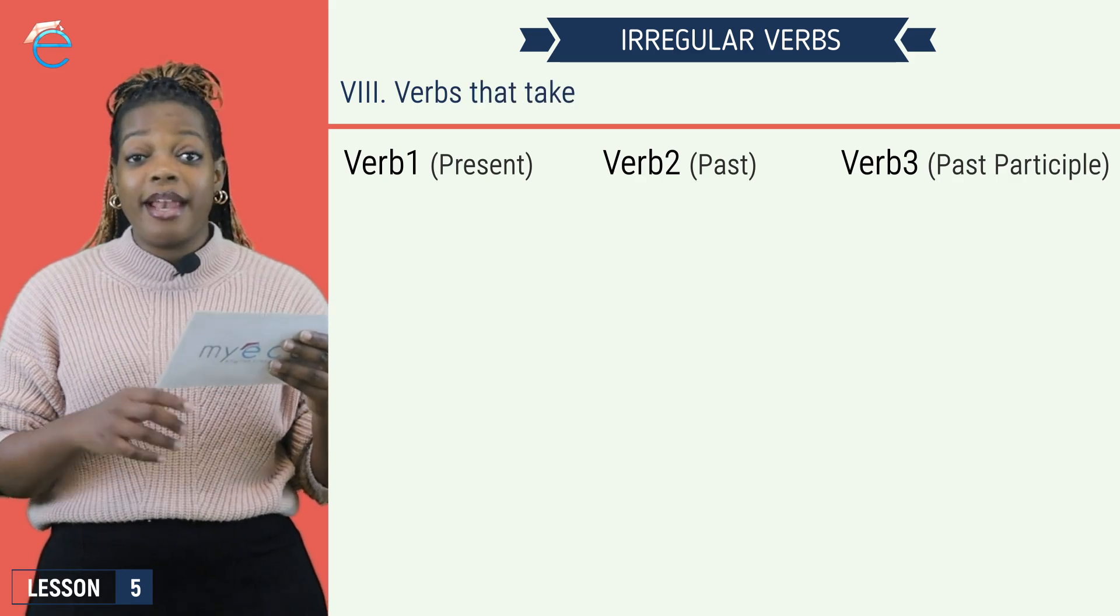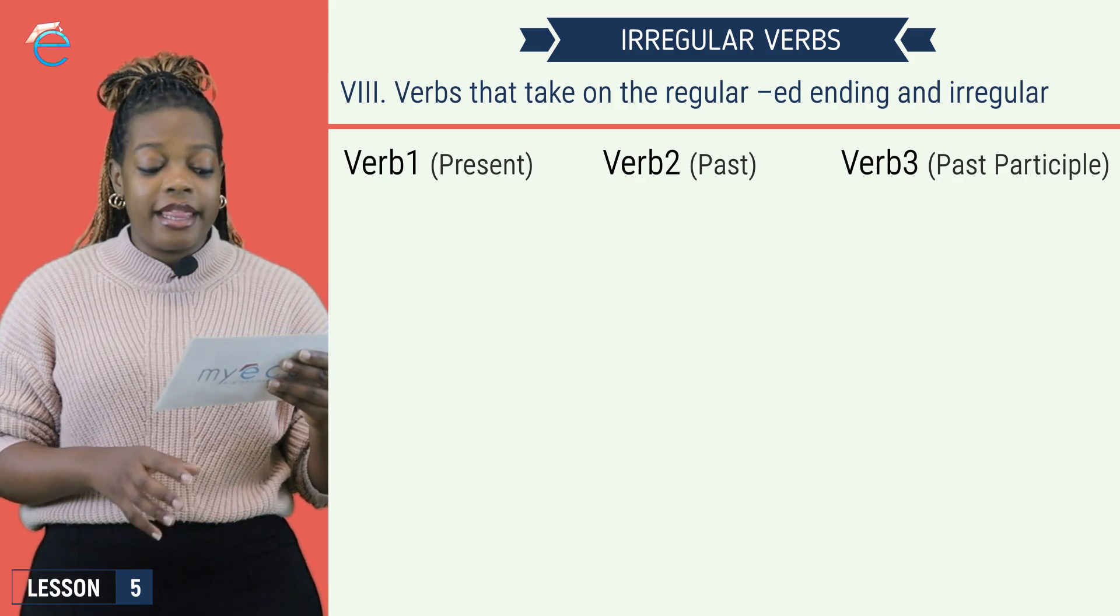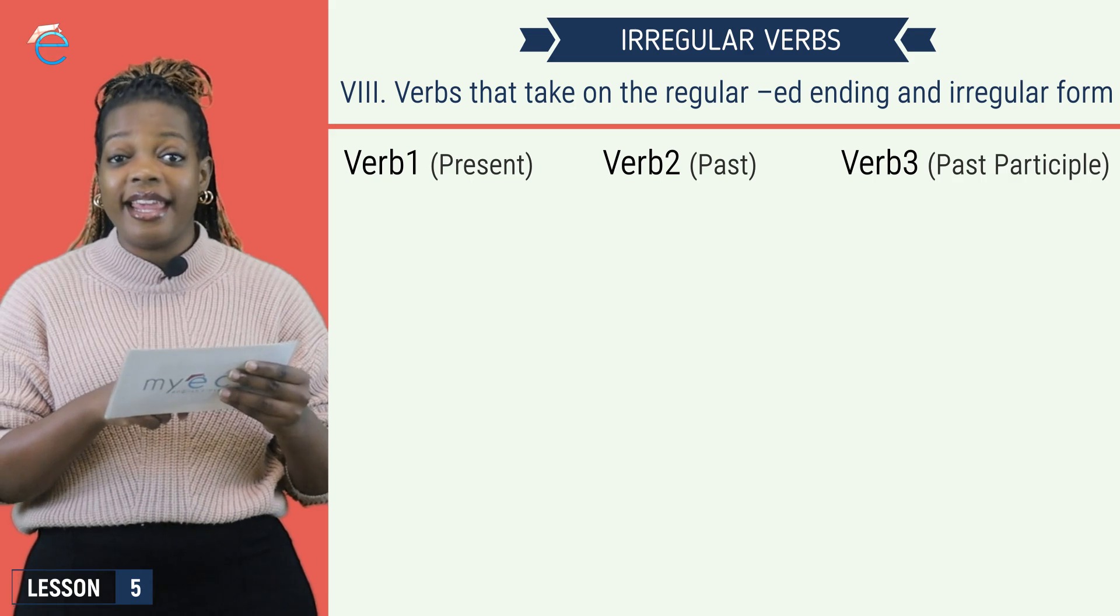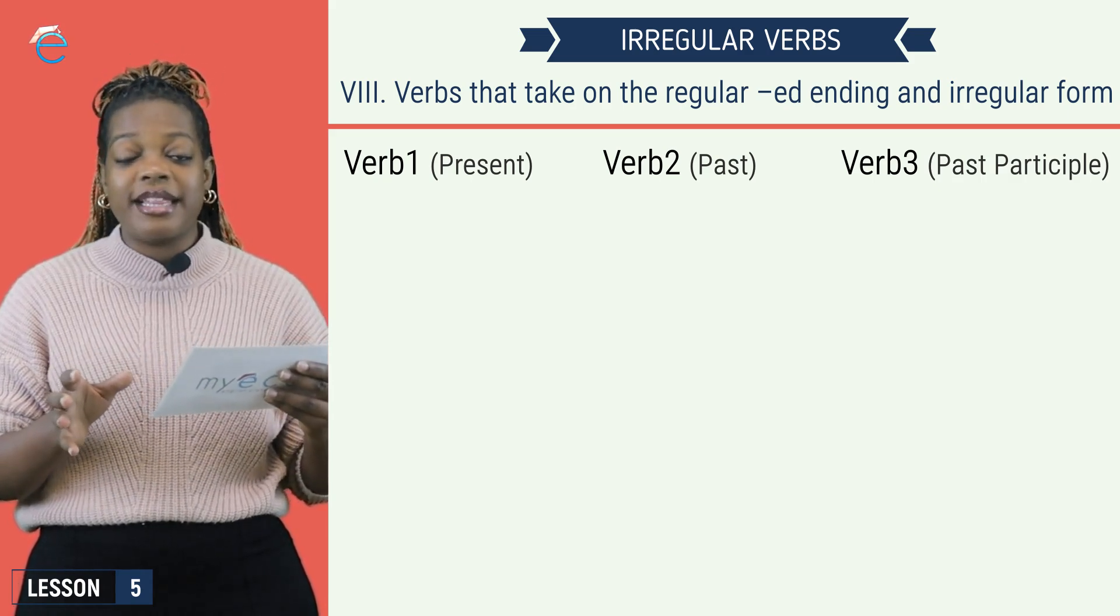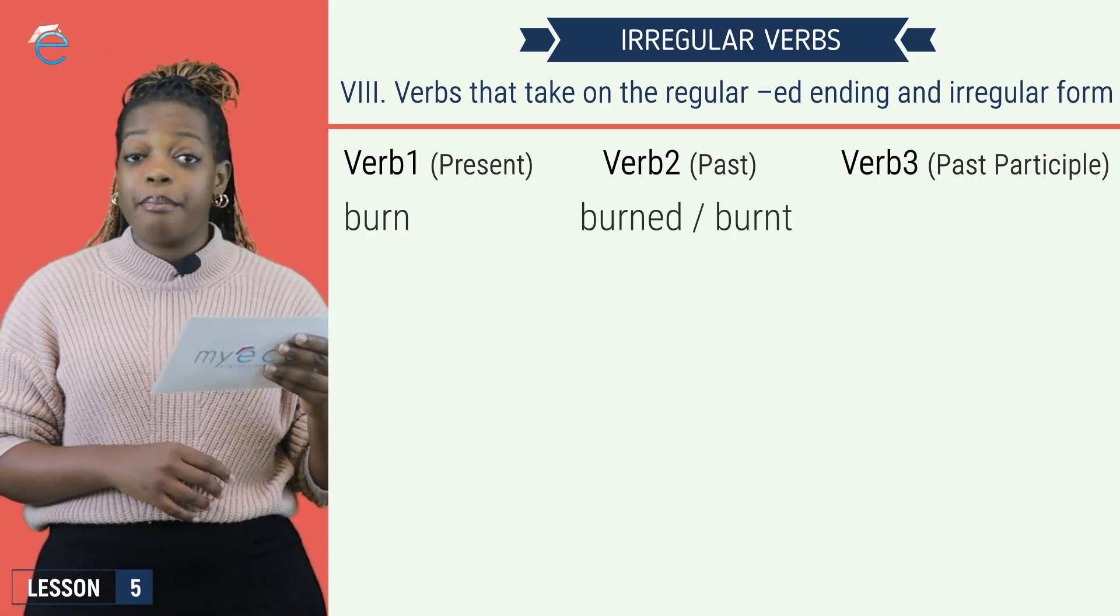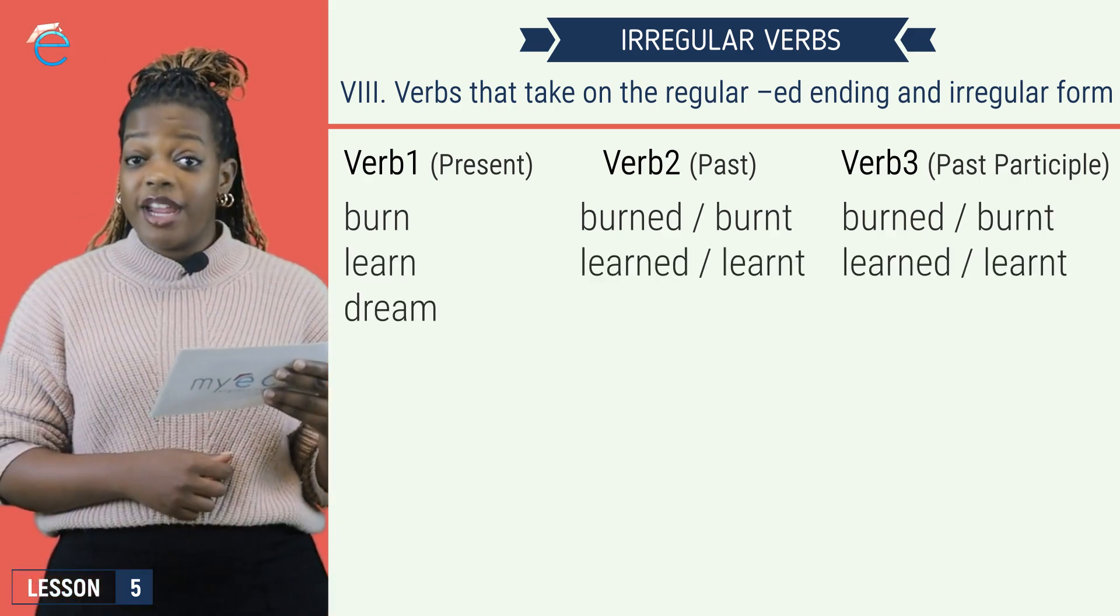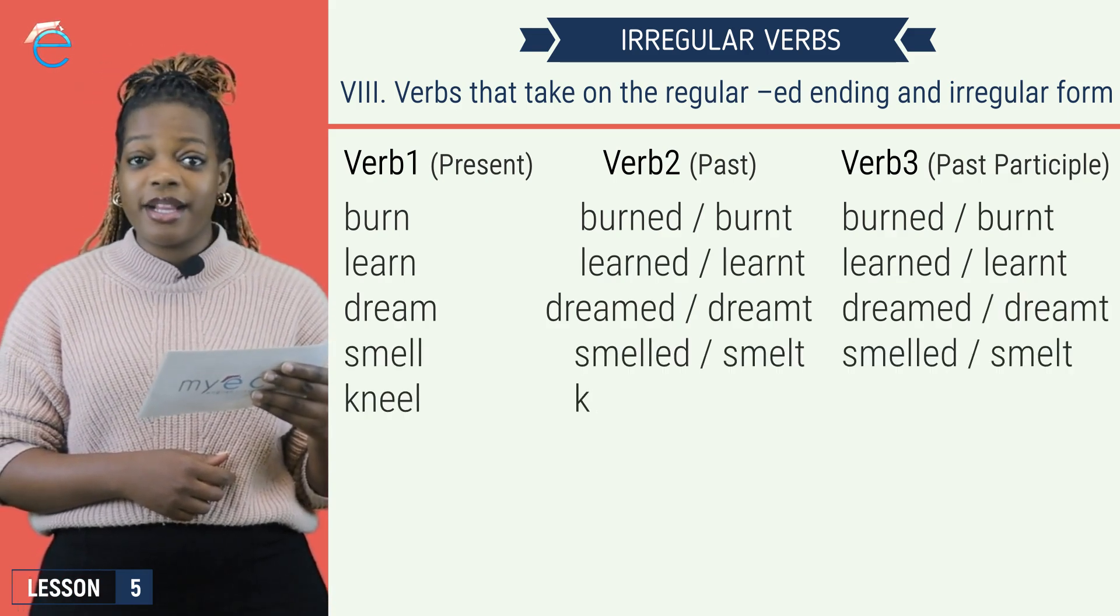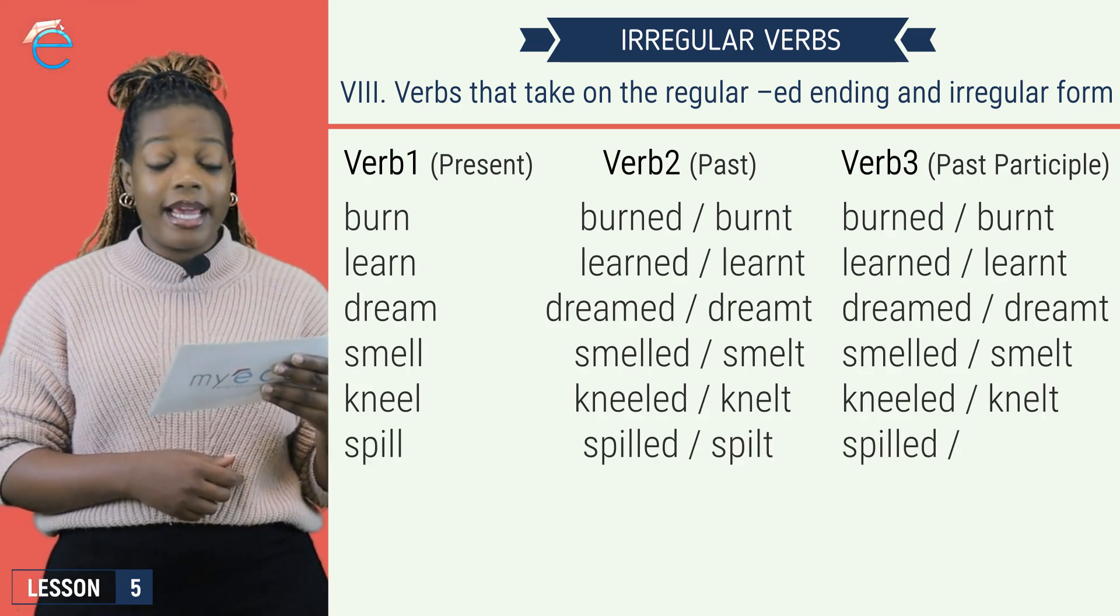And group number 8 are verbs that take the irregular form and the regular ed ending. Yes. So these are some verbs that can be in both groups. Burn, burned, burnt. Dream, dreamed, dreamt. Smell, smelled, smelt. Kneel, kneeled, knelt. Spoil, spoiled, spoilt.